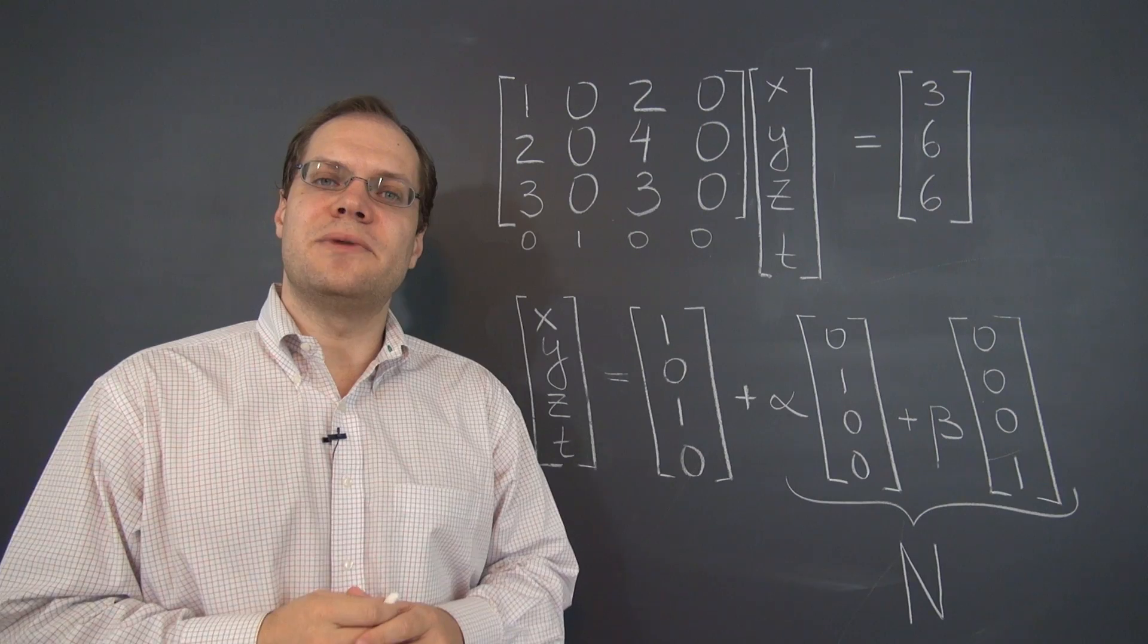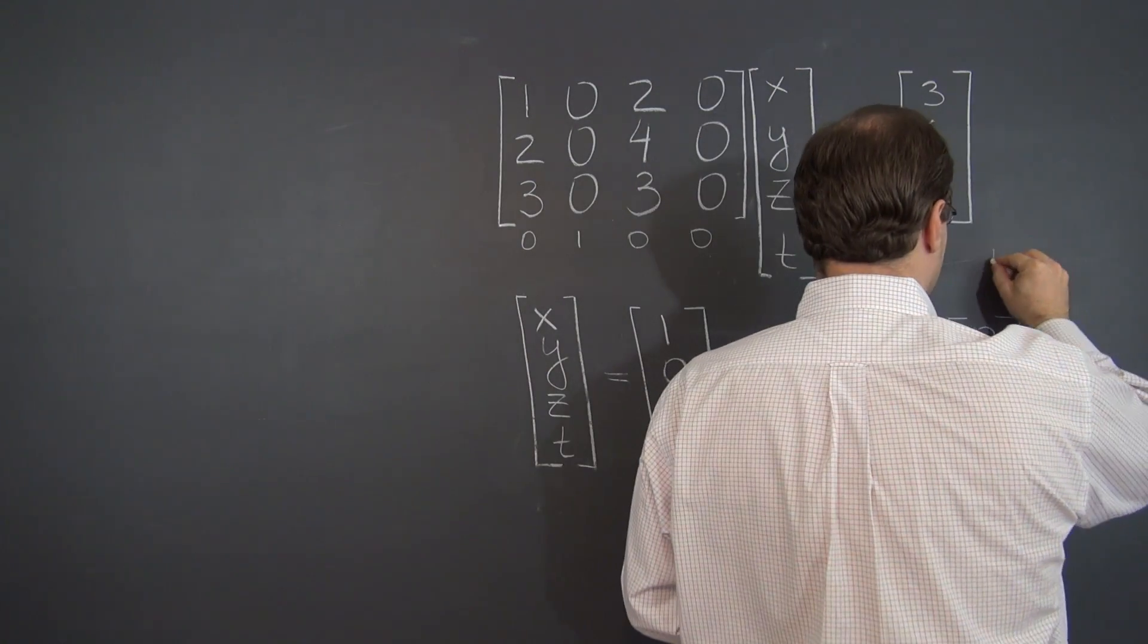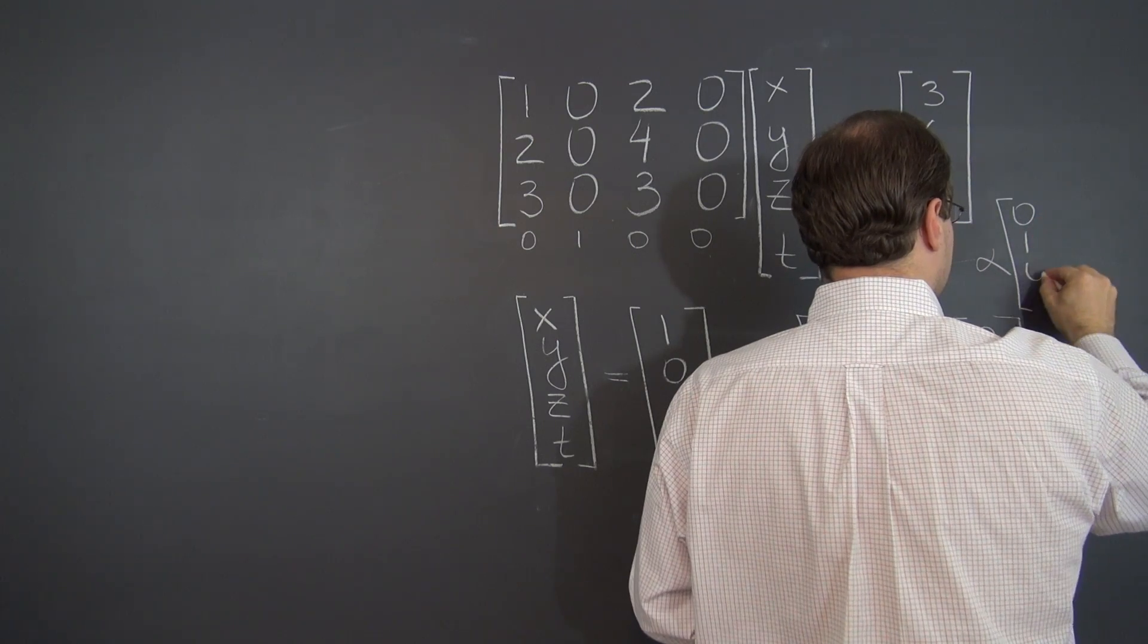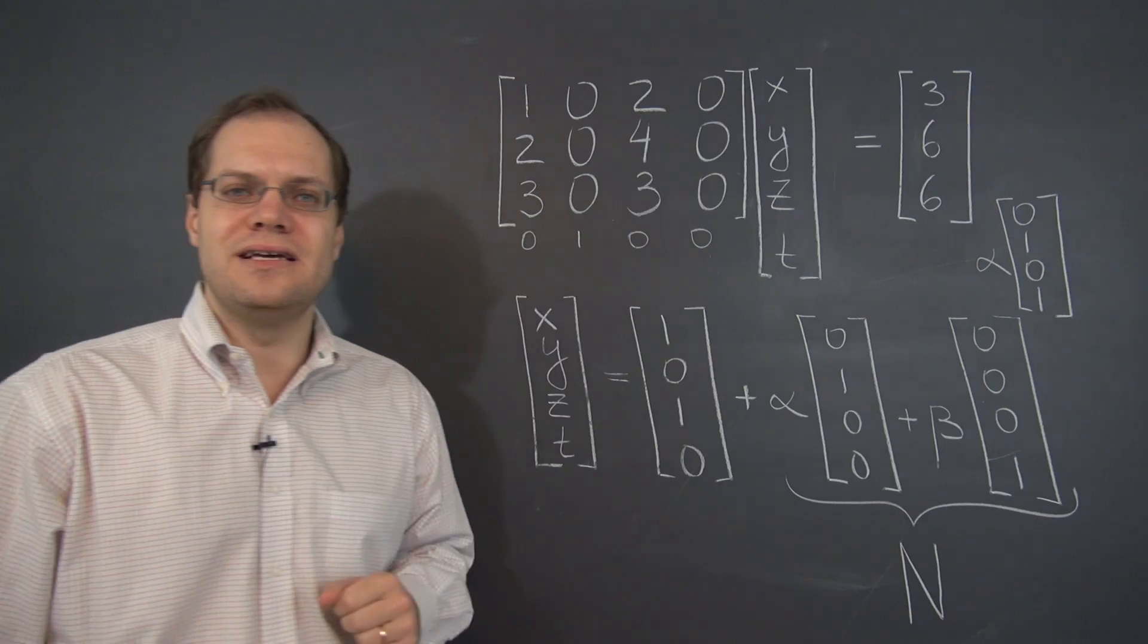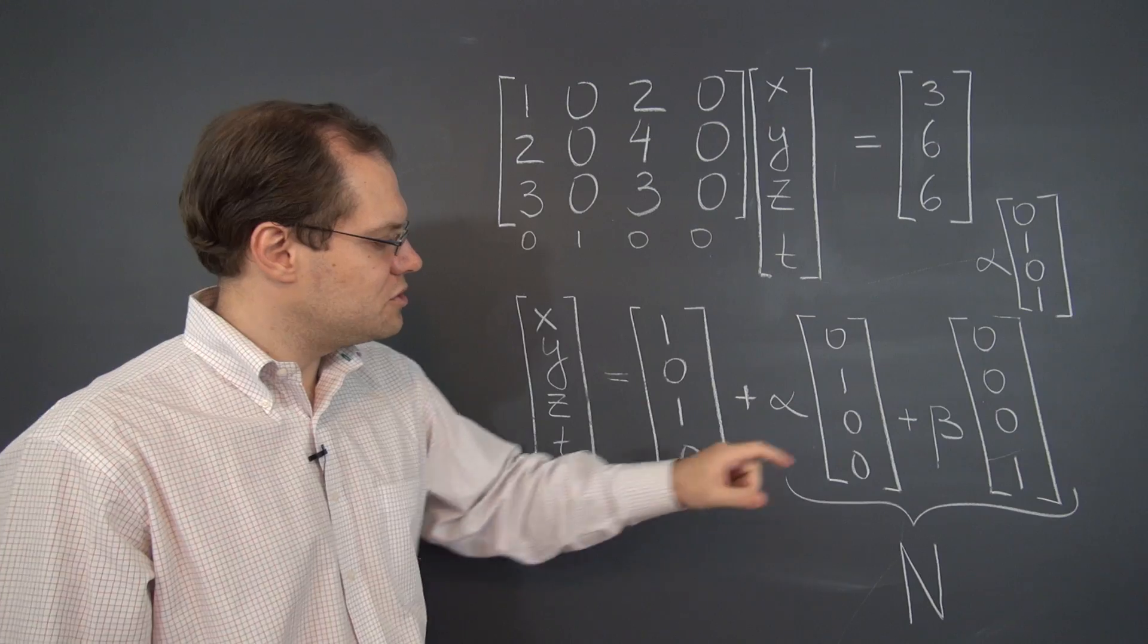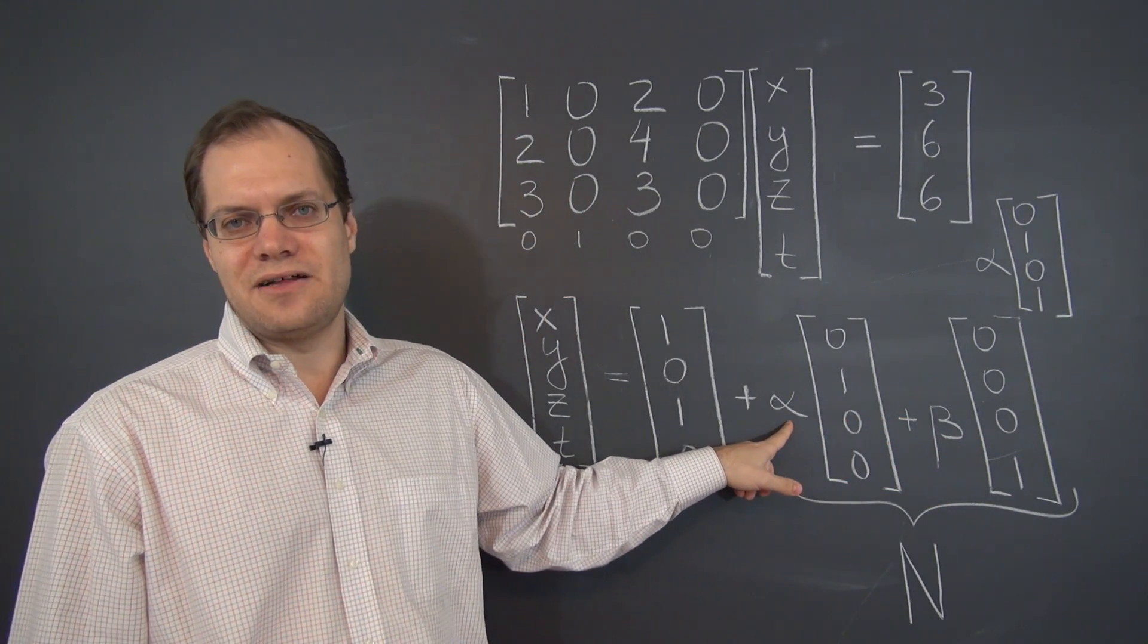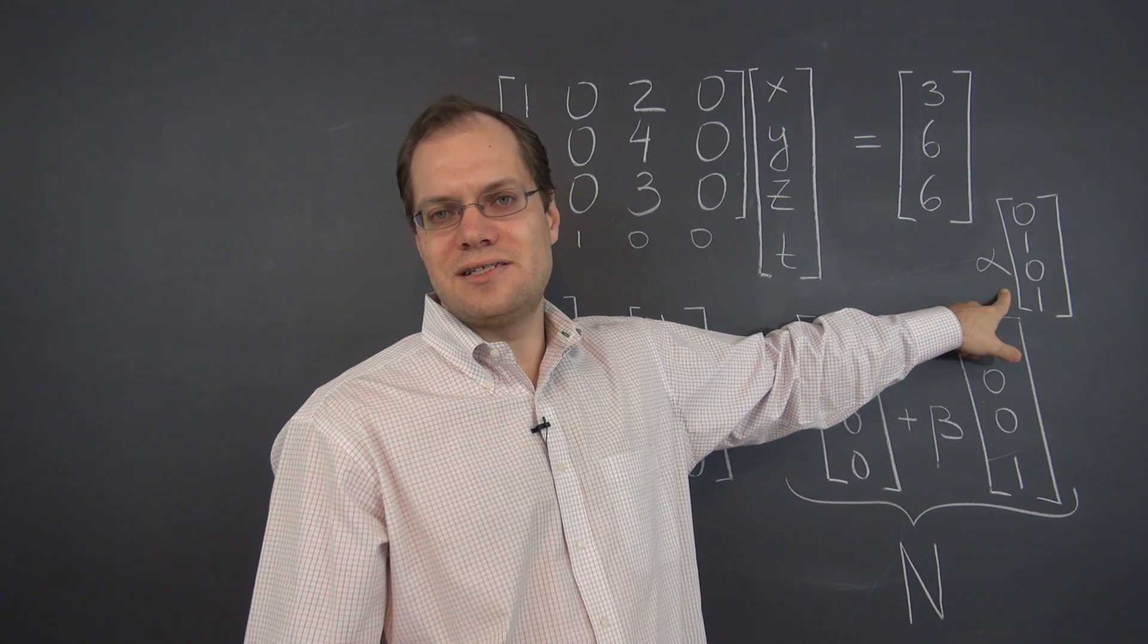Now I would like to mention one common mistake that I see for this problem. I often see the null space appear as alpha, zero, one, zero, one. And this is incomplete. It is true that this vector is in the null space, which you can see by assigning beta always the same value as alpha. And that tells us that this vector is in the null space.